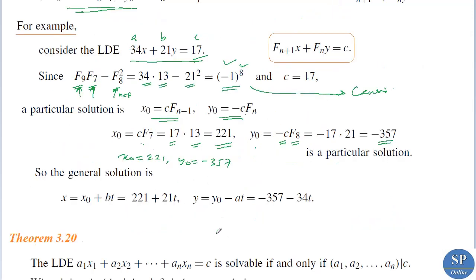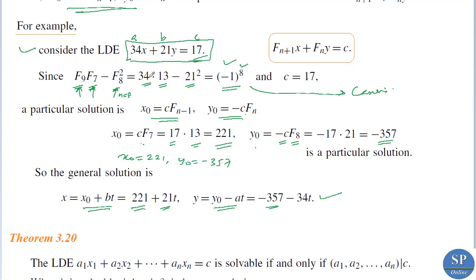So the general solution is x equal to x₀ plus bt and y equal to y₀ minus at. Here a equals 34 and b equals 21. So x equals 221 plus 21t and y equals minus 357 minus 34t. This is the general solution of this LDE. We can connect LDEs with Fibonacci numbers; some LDEs can be solved using Fibonacci numbers.